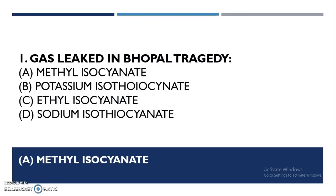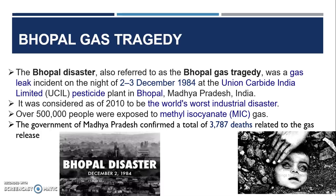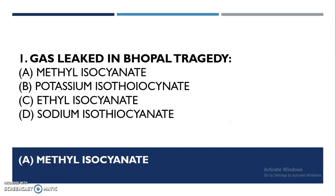First question: the gas leaked in the Bhopal gas tragedy was methyl isocyanate. It was a gas leak incident on the night of 2nd December 1984 at the Union Carbide India Limited pesticide plant in Bhopal, Madhya Pradesh. It was considered the world's worst industrial disaster till 2010. More than 5 lakh people were exposed, and the government confirmed 3,787 deaths related to the gas release.